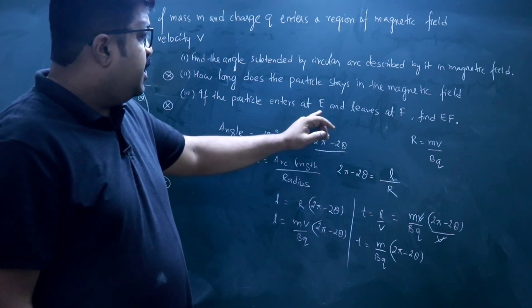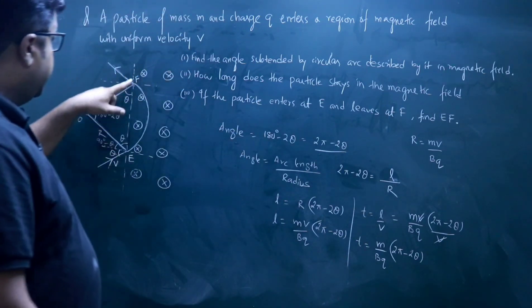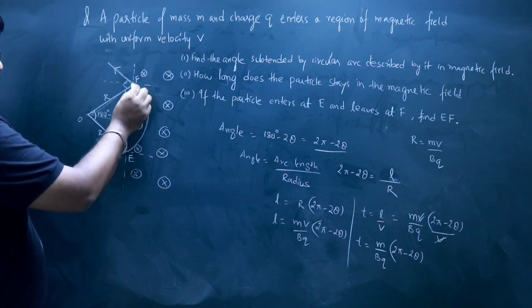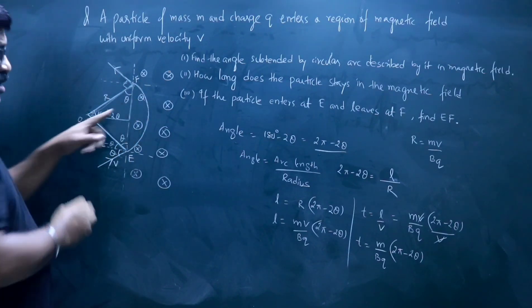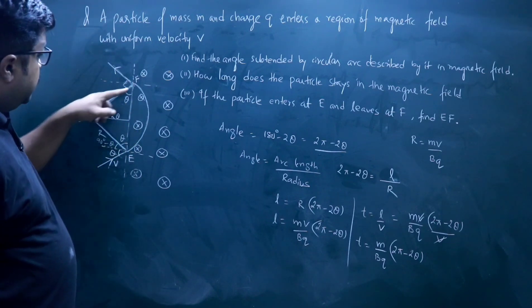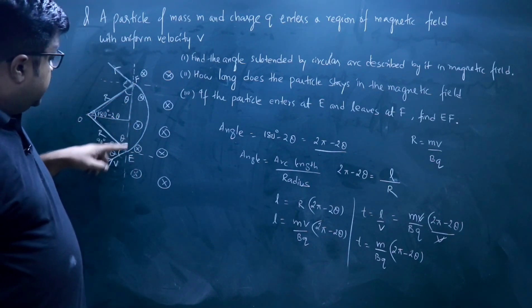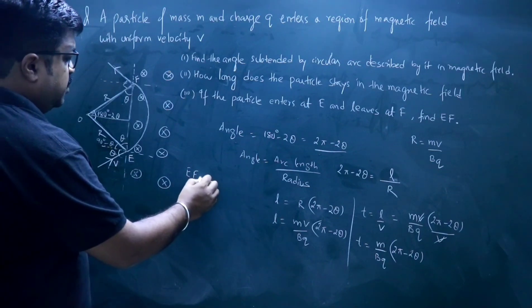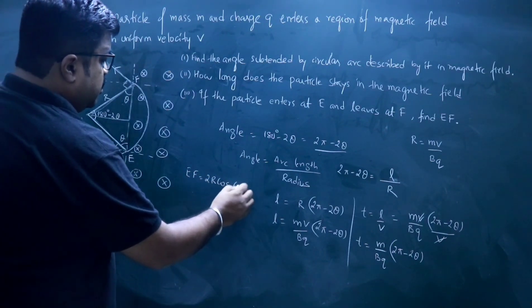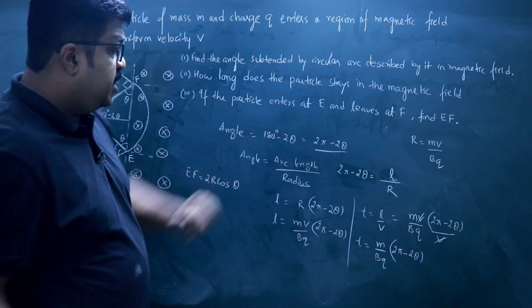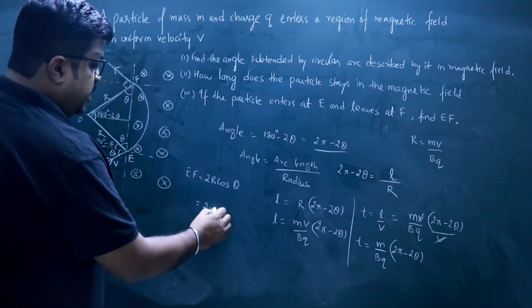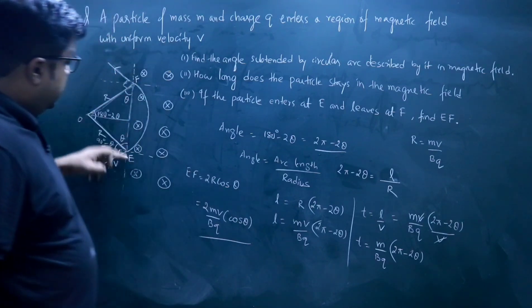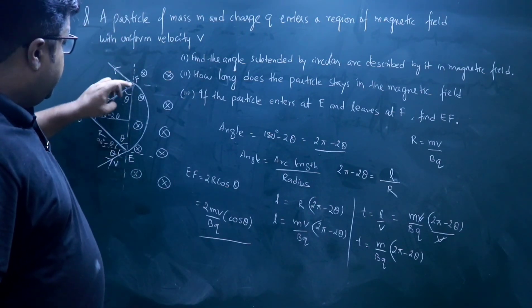The last part: if the particle enters at E and leaves the field at F, find EF. If you form a right-angle triangle here, this angle is theta, this side is R, so this measurement will be R cos theta. Similarly, this side will also be R cos theta, so the entire length EF is equal to 2R cos theta. Since R equals MV divided by BQ, this gives EF equals 2MV cos theta divided by BQ.